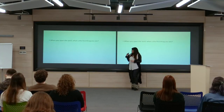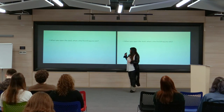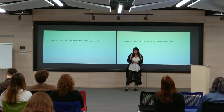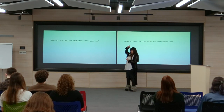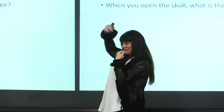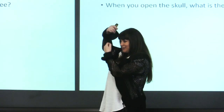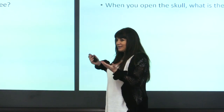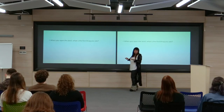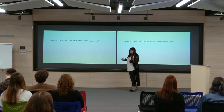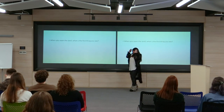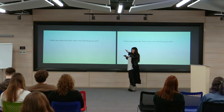When you open the skull, what is the first thing you see? Think like a neurosurgeon — you cut the skin, you open the skull. What do you see? Actually, you don't see the brain yet, and that is exactly the point. The brain is so well protected that even the skull is not enough. After the skull, there are different layers of membranes.